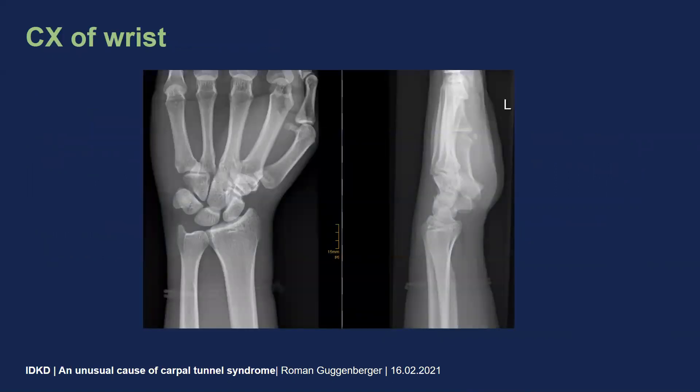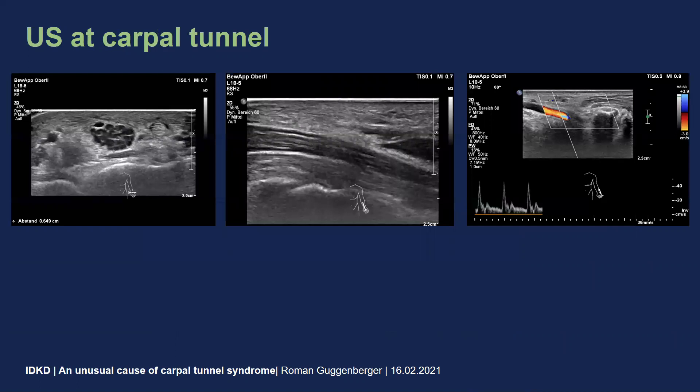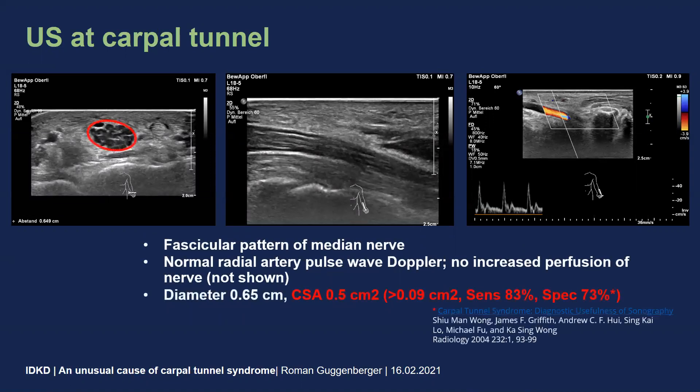The conventional x-ray of the wrist was actually unremarkable. We could not find any signs of trauma or fracture. At the ultrasound, our resident found a significantly enlarged median nerve underneath the flexor retinoculum with fascicular structure of the nerve, and on Doppler ultrasound there were normal pulsations in the radial and ulnar arteries. However, there was no increased perfusion of the soft tissues or the median nerve itself. The diameter of the nerve was significantly increased to about seven millimeters, and especially the cross-sectional area was about half a centimeter squared, which would be highly indicative of a carpal tunnel syndrome according to many publications in the literature.